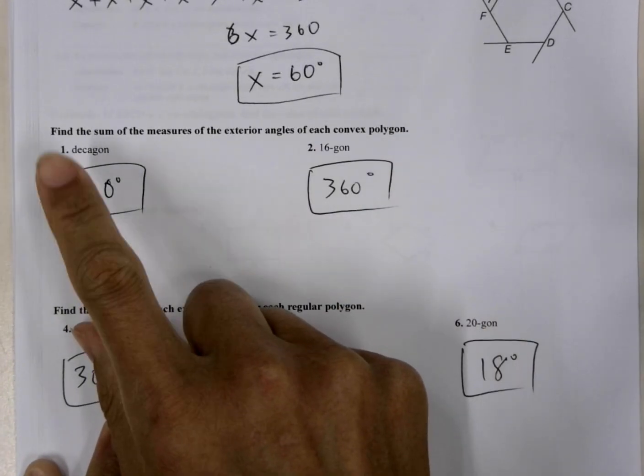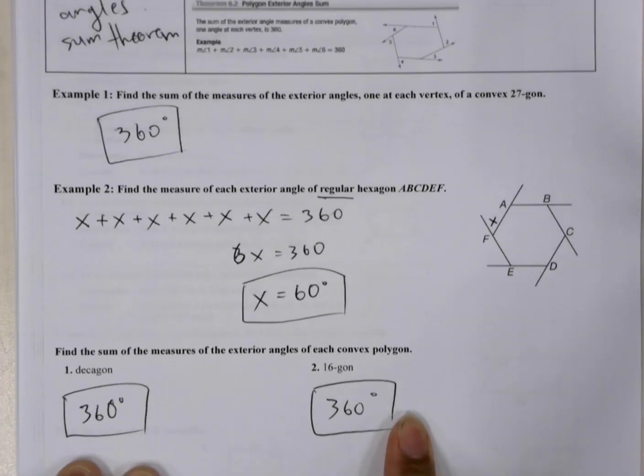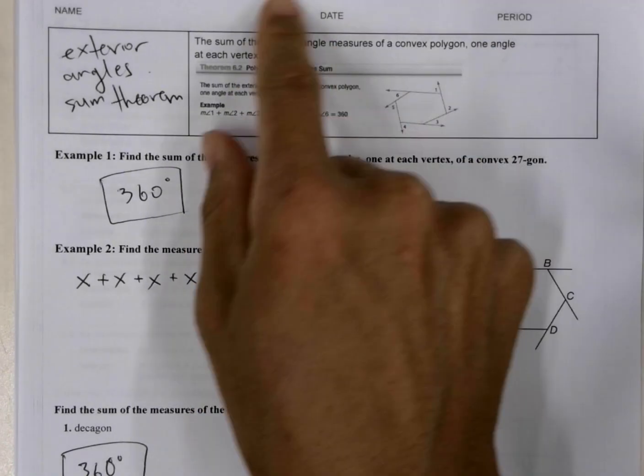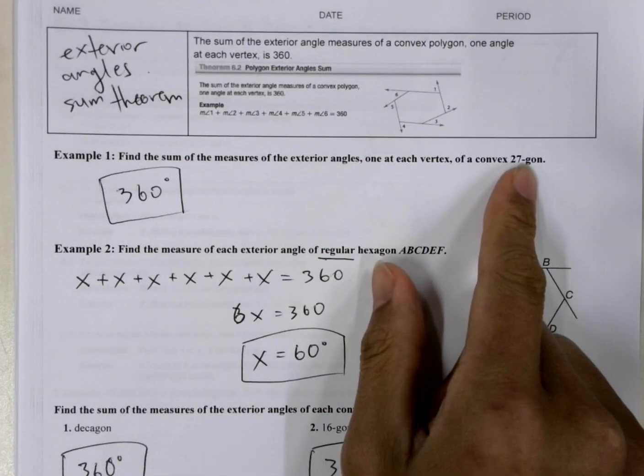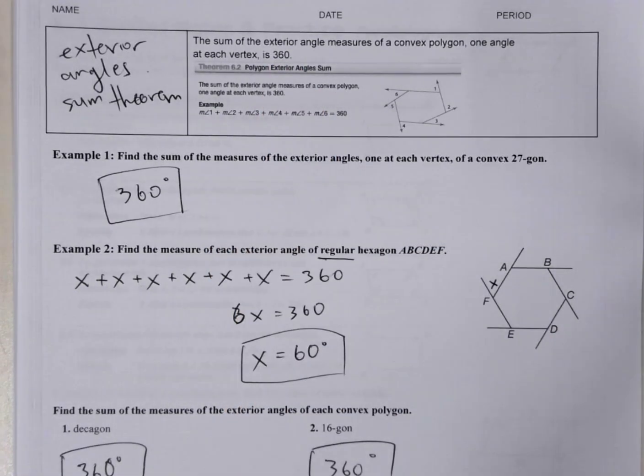They give you a decagon, which is 10-sided, and a 16-gon, which has 16 sides. And we know from the exterior angle sum theorem that it doesn't matter how many sides the polygon has, the sum of the exterior angles is going to be 360 degrees.